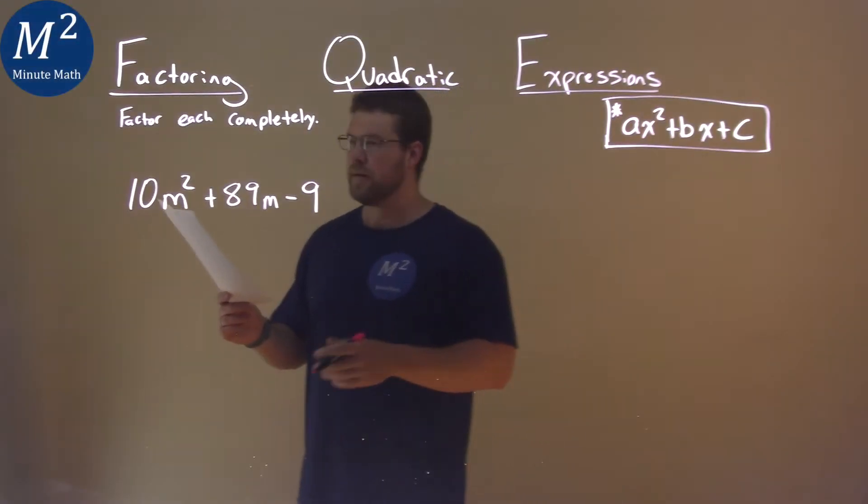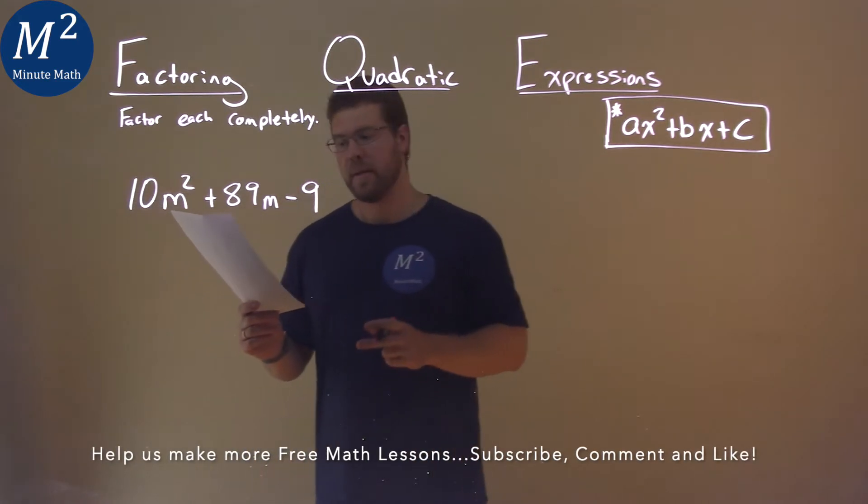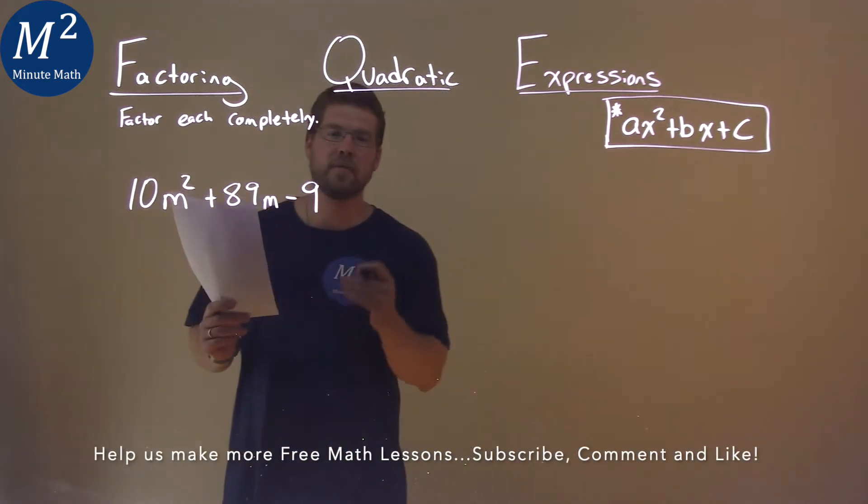We're given this problem right here, 10m squared plus 89m minus 9, and we want to factor this completely.